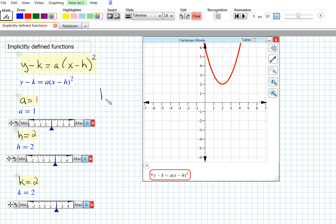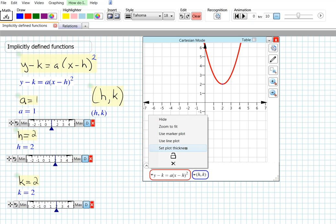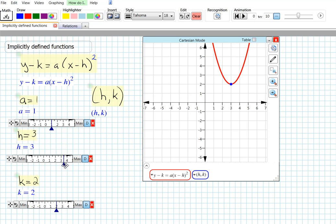I find that students understand better this idea if I create a point (h, k). Let's change the thickness of the point so it's more easily seen. And now as you move the sliders, it's very clear that the vertex is changing and the coordinates of the vertex are (h, k).